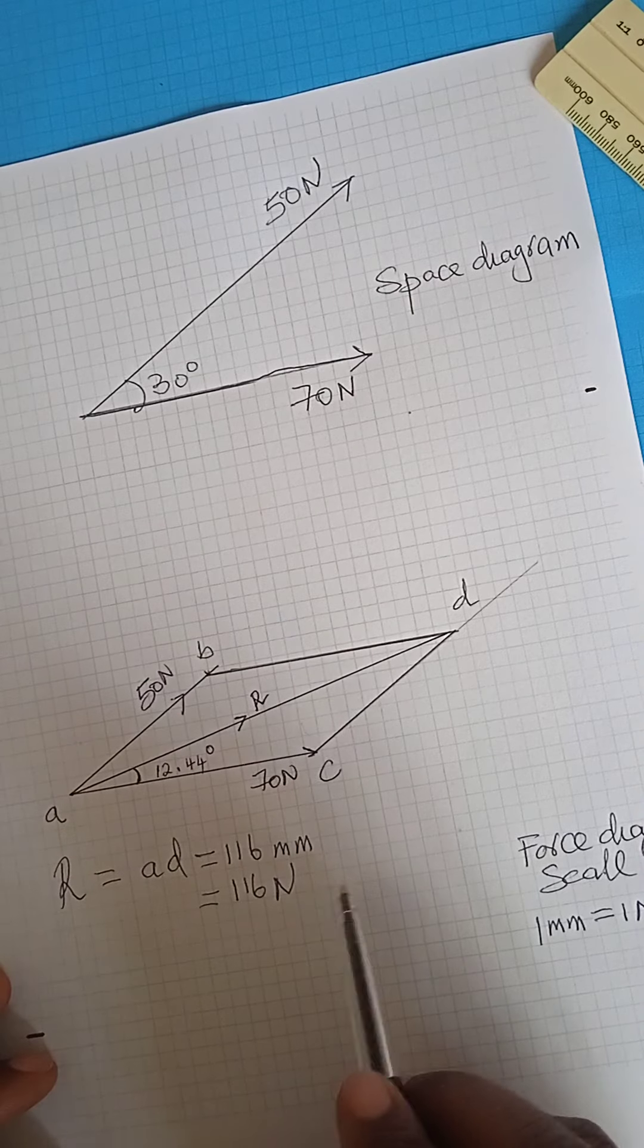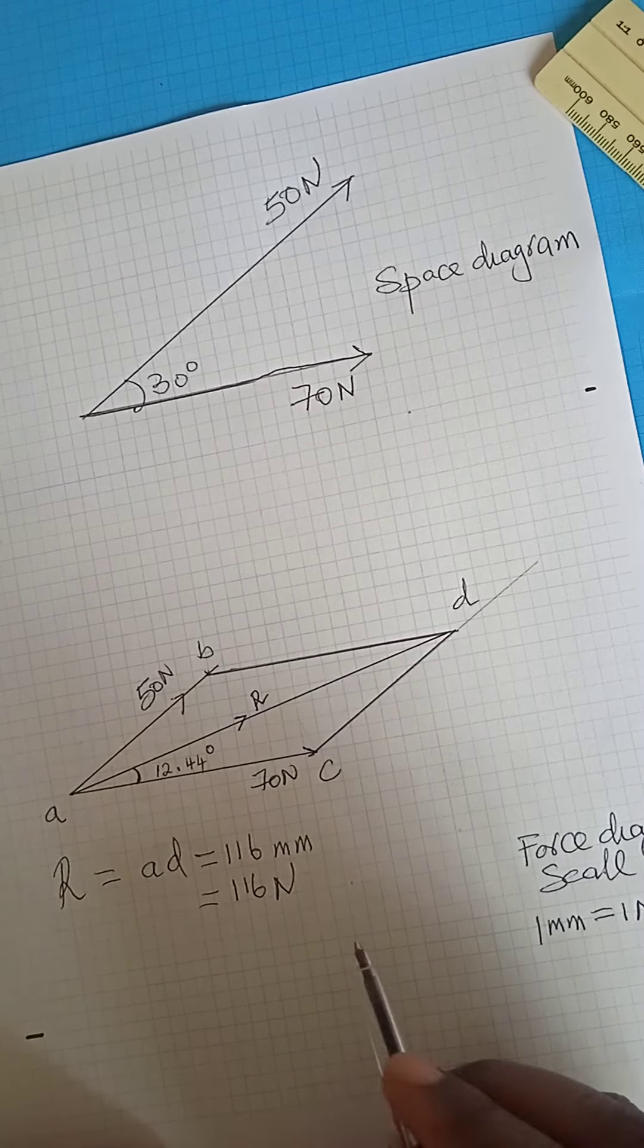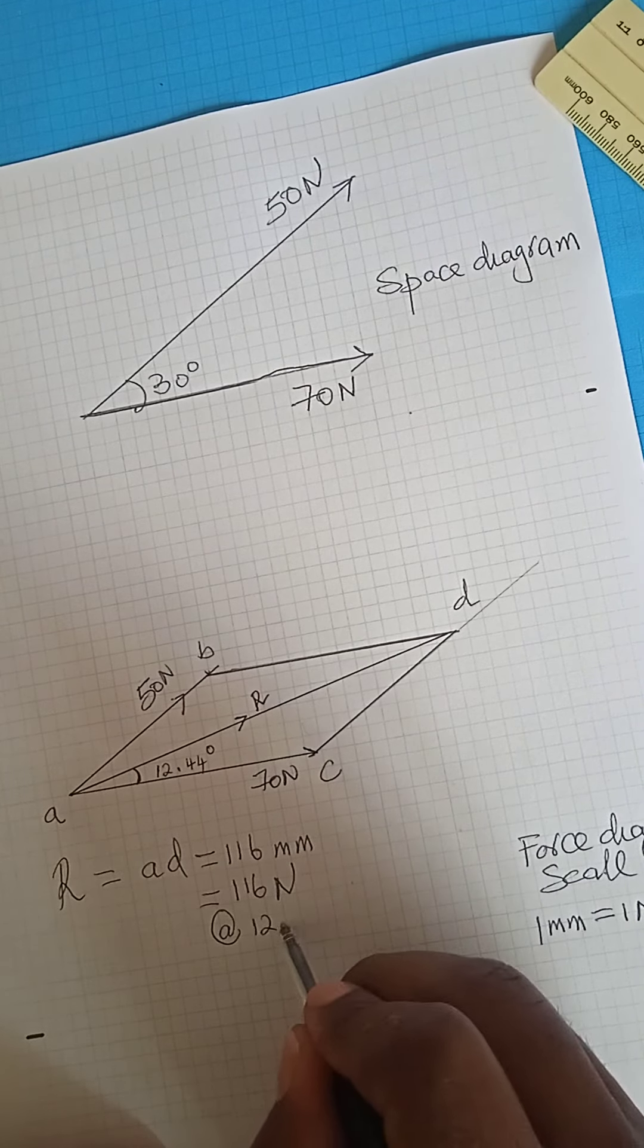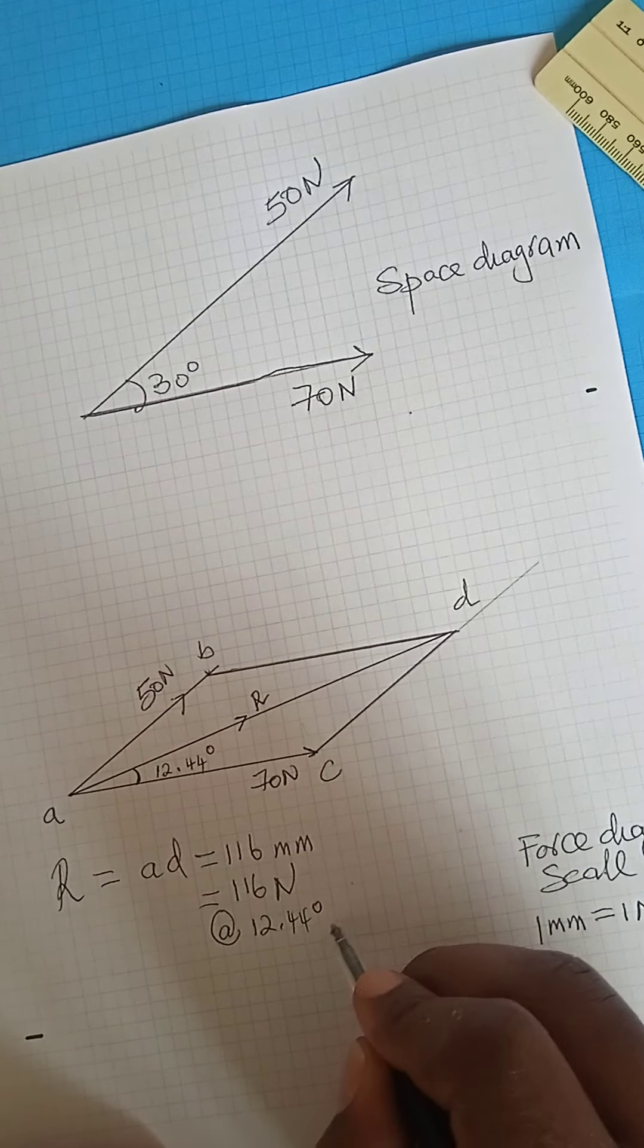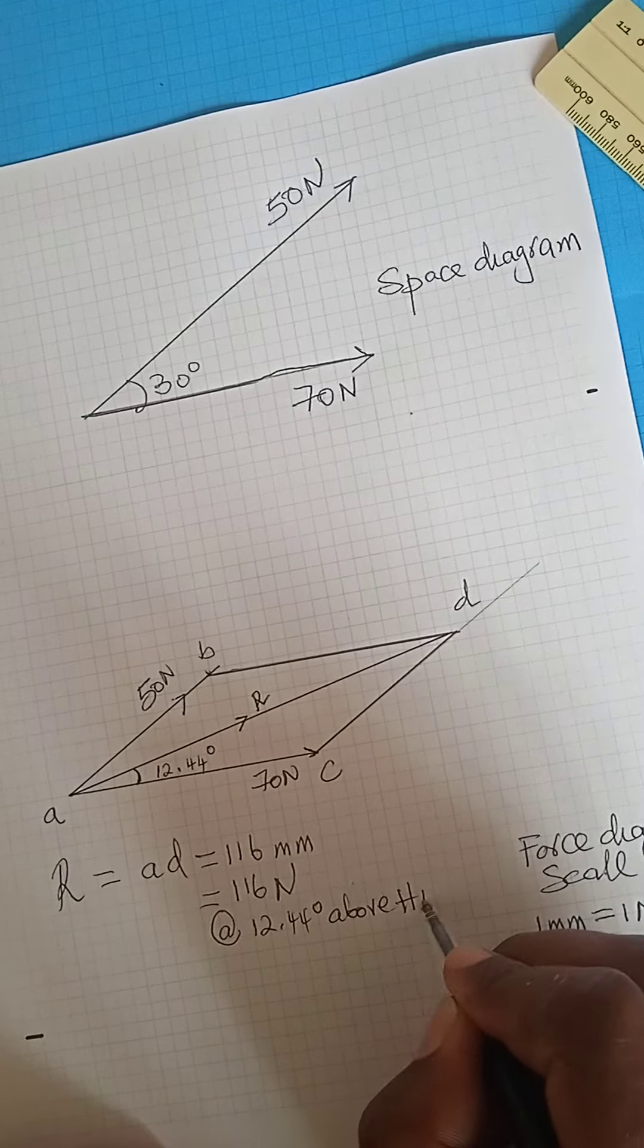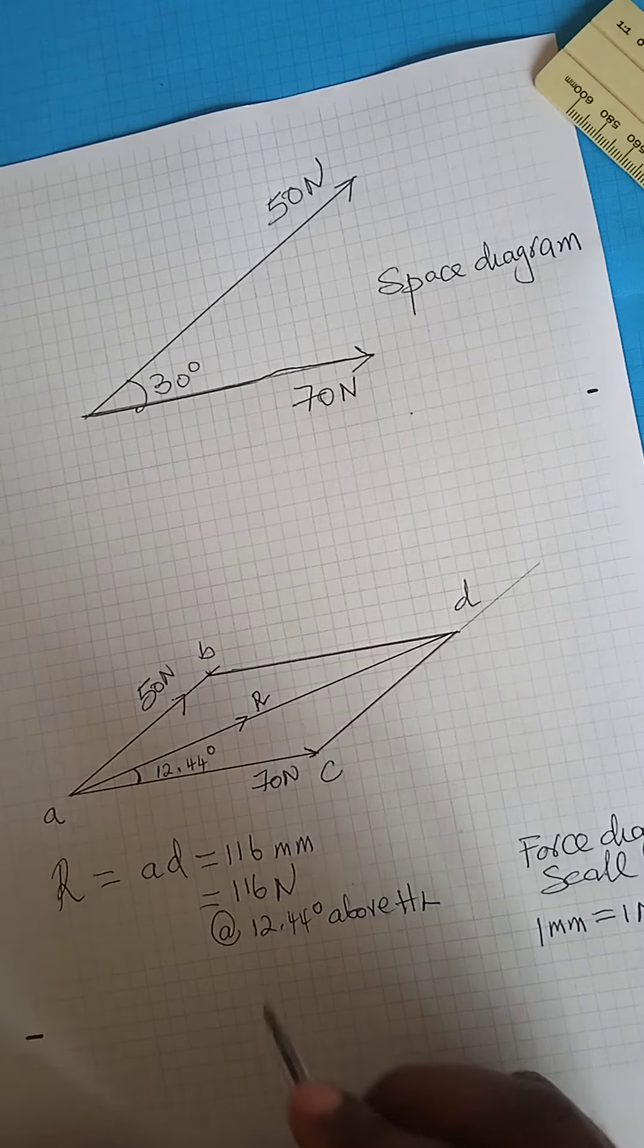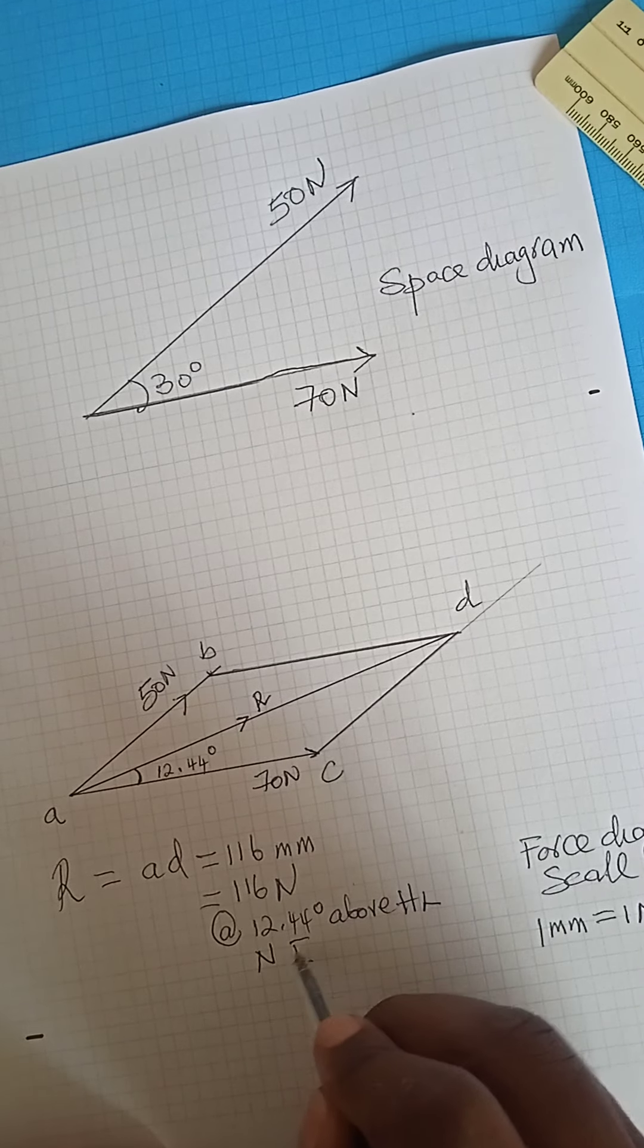So when you write your answer now in full, your result is 116 Newtons and acting at 12.44 degrees above the horizontal line. And the direction, the general direction will be northeast.